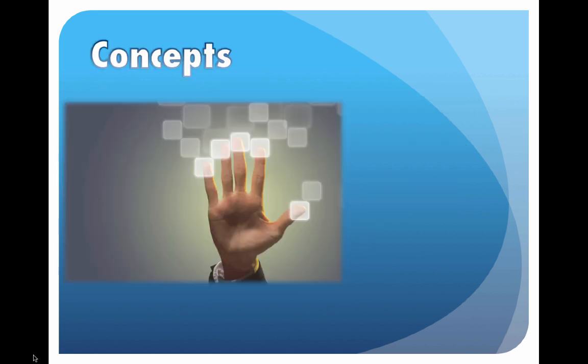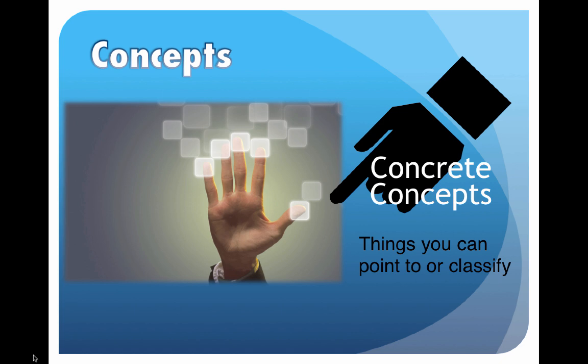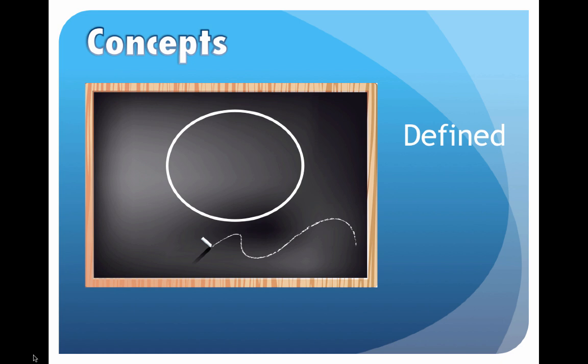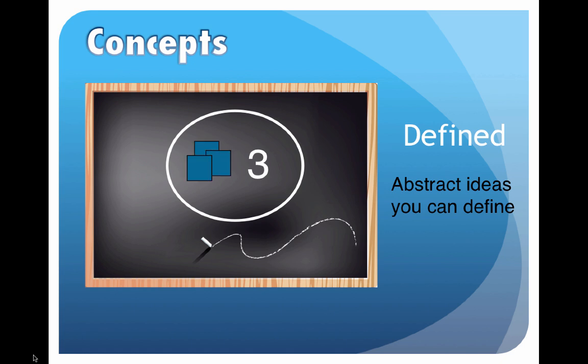We have concepts — there are two types. First, concrete concepts are the things that you can point to or classify. For example, if you ask a child to sort through and take out all of the blocks out of a basket of toys, they would be classifying those things that were blocks. Defined concepts are a little bit different — these are abstract ideas that you can define. For example, the number 3 is an abstract concept, but we can demonstrate it by taking 3 objects: 3 cats, 3 dogs, 3 blocks — all the same concept of 3.